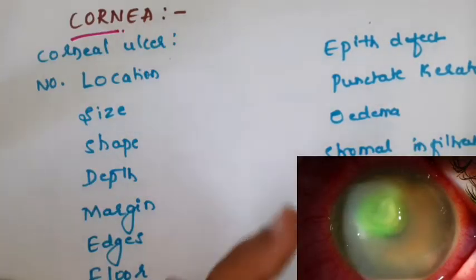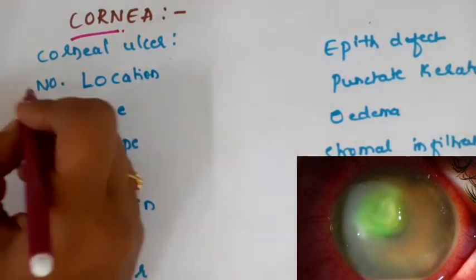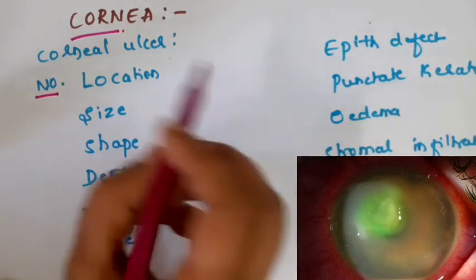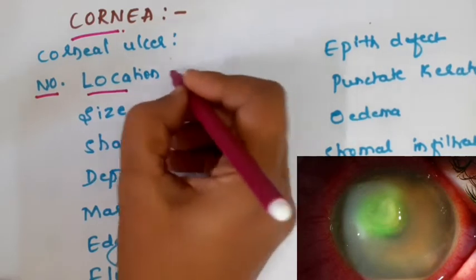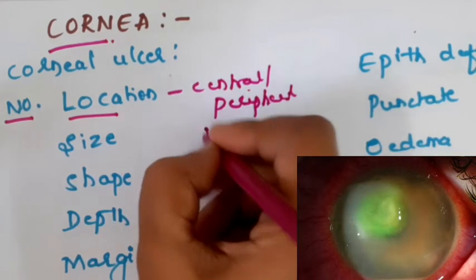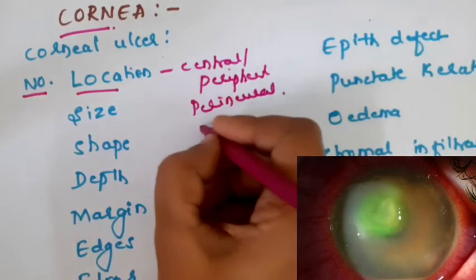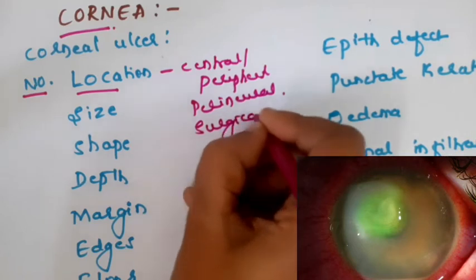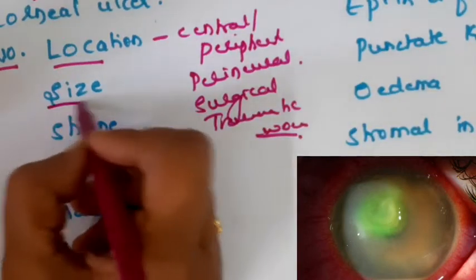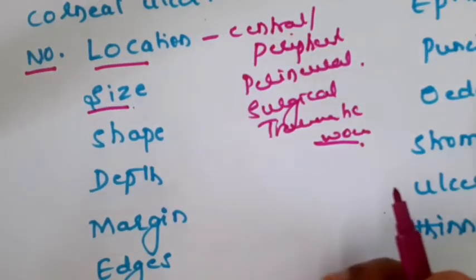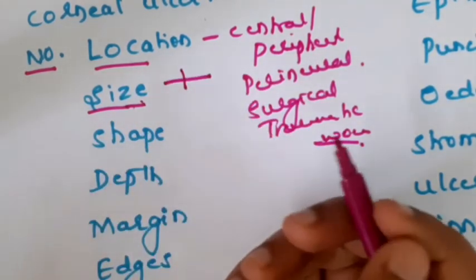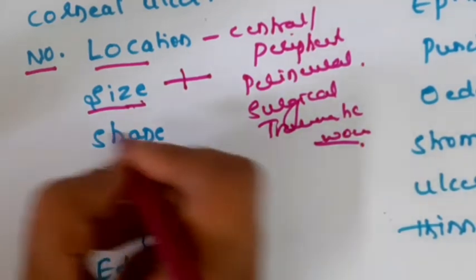In the corneal examination, when describing the corneal ulcer, first mention the number - whether there is a single or multiple corneal ulcer. Then comes the location - whether it is central or peripheral, whether it is around the corneal nerves (perineural), or adjacent to a surgical or traumatic wound. Then mention the size - use the slit lamp beam to accurately measure the corneal ulcer both horizontally and vertically.